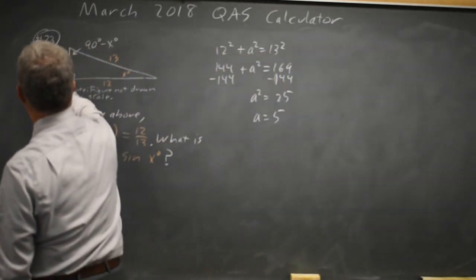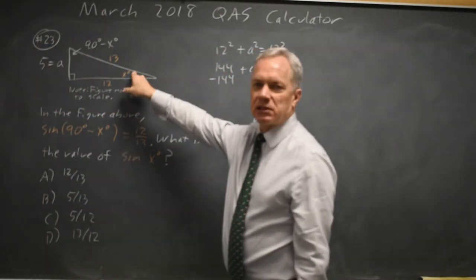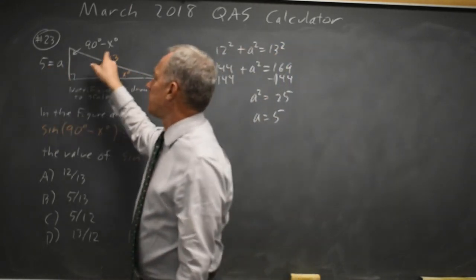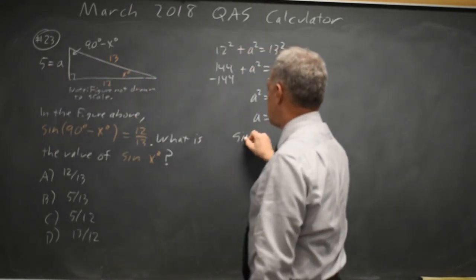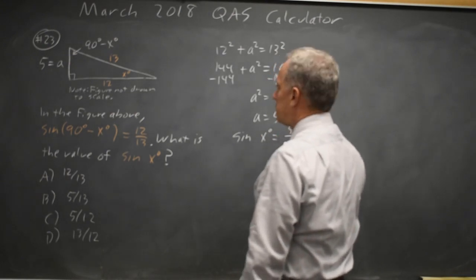And they're asking for the sine of angle x. The sine is the opposite over the hypotenuse, and the opposite is 5, hypotenuse is 13.